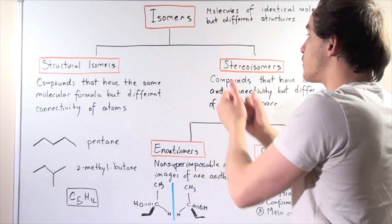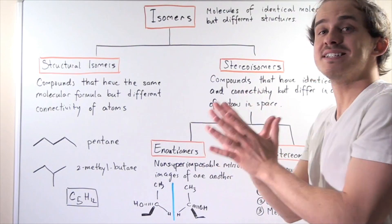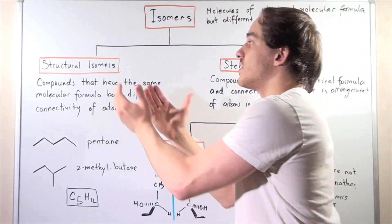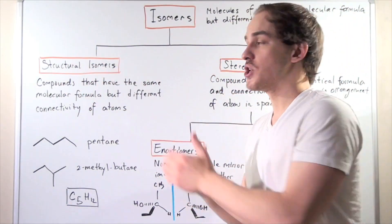So stereoisomers are isomers, and an example of an isomer is a stereoisomer. But it's not the only one that exists. There are also structural isomers that are not stereoisomers.